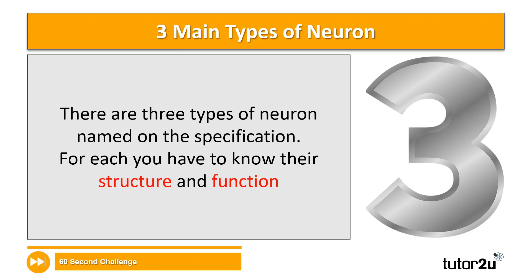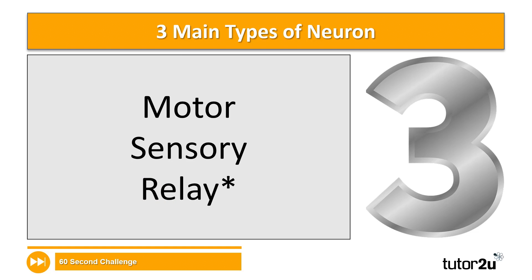There are three types of neurons named on the specification, and I'm going to test your knowledge here. Please complete next to question four in your booklet what you think the names of the different types of neuron are. The three types are motor, sensory, and relay. Because each of these is named on the specification, it's possible you could have a question on the structure and/or function of any one of them.